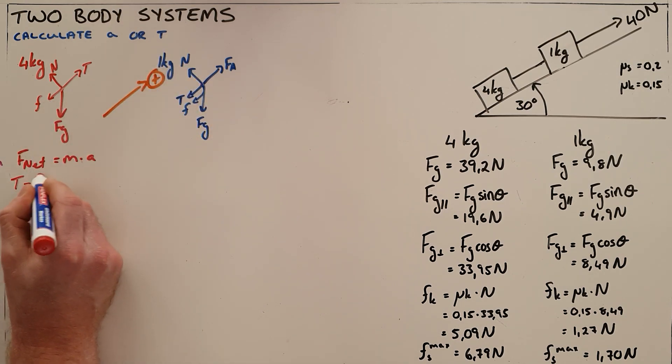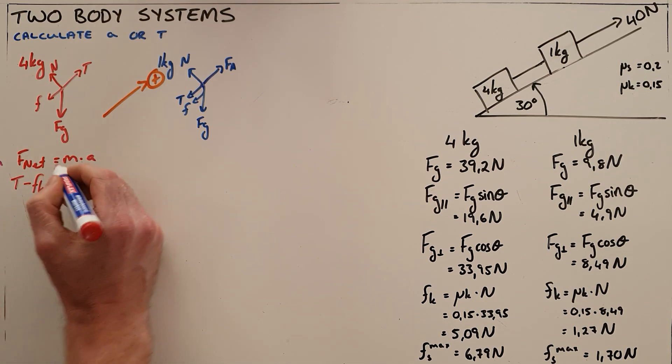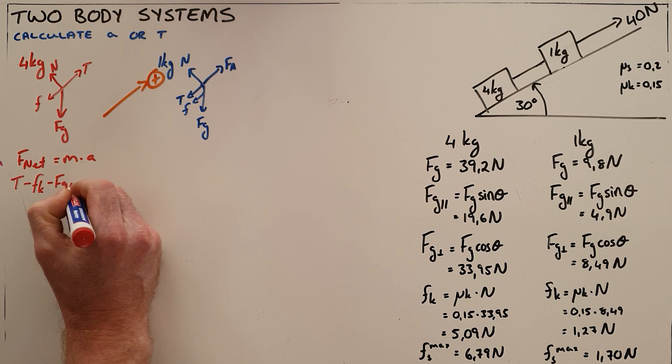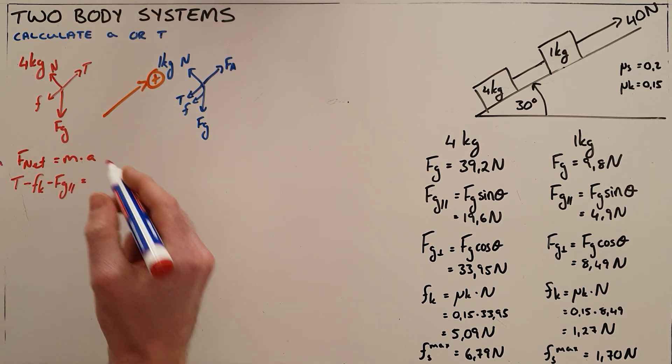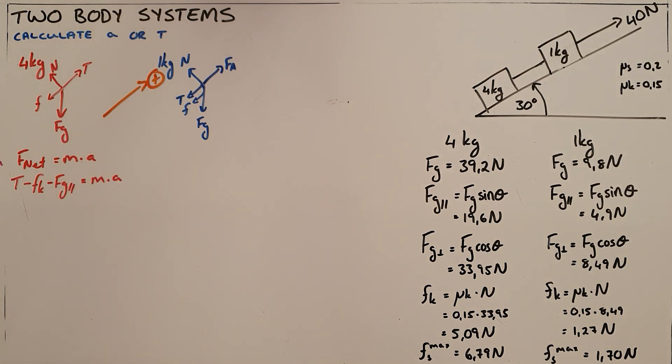Minus the forces pulling it down the slope, in this case that is the kinetic frictional force and the parallel component of gravity, which is then equal to the mass of this object multiplied by its acceleration.